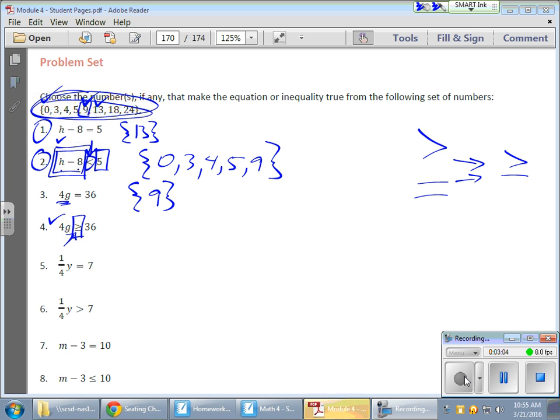I'm looking for this side to be greater than 36 at the same time. So logic would dictate then I need the values that are greater than 9, like 13, because 13 times 4 is going to give me a value greater than 36. So the 13 and the 18 and the 24 all qualify because if I substitute any of those values for g, my answer will either be greater than 36 or equal to 36. That's kind of how it works.